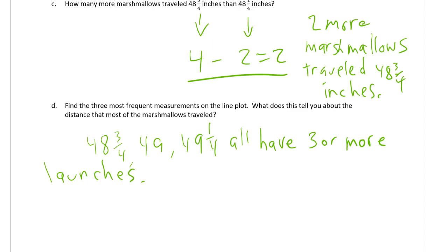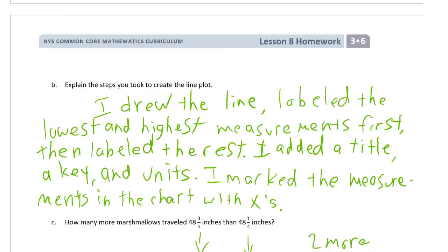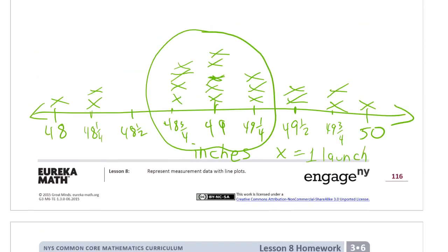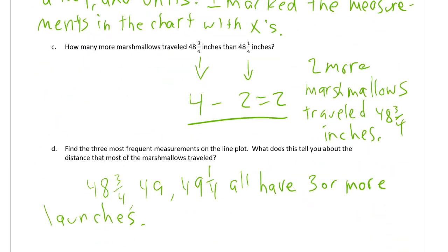What does this tell you about the distance that most of the marshmallows traveled? Let's just look at the shape of this line plot. It looks a little bit like a mountain. Sometimes what you're doing is you're just looking at the shape of your graph. I'm saying most of them were around 49 inches. That's what it tells me.